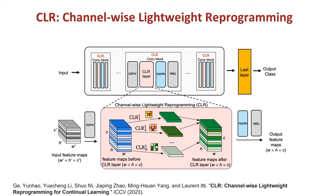In our architecture, each convolutional block is augmented with a CLR layer immediately following the standard convolutional layer. The gray portion of the architecture remains identical to the pre-trained model, as it is kept fixed throughout the learning process. For each channel in the feature map generated by the convolutional layer, we apply a 3x3 channel-wise convolution, as opposed to a traditional convolutional layer, resulting in significant parameter savings. To further optimize the parameter count, we omit the CLR layer following any 1x1 convolutional layers. Consequently, the total additional parameters introduced by our method amount to just about 0.6% of the overall network size.